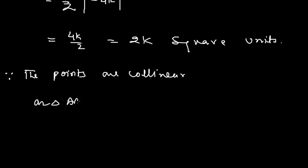Therefore 2K = 0, which means K = 0. This is the solution of the example. Thank you.